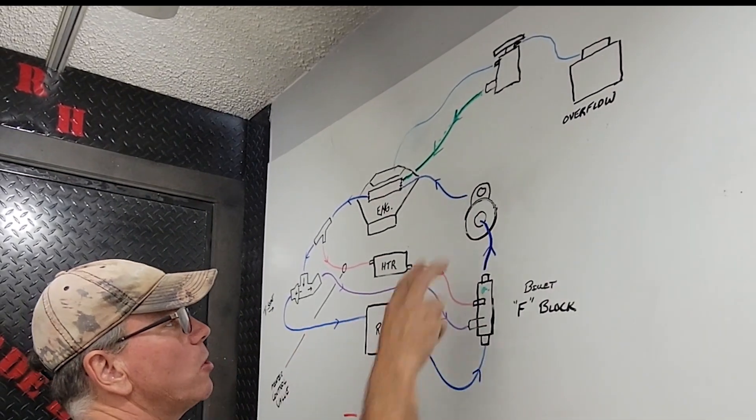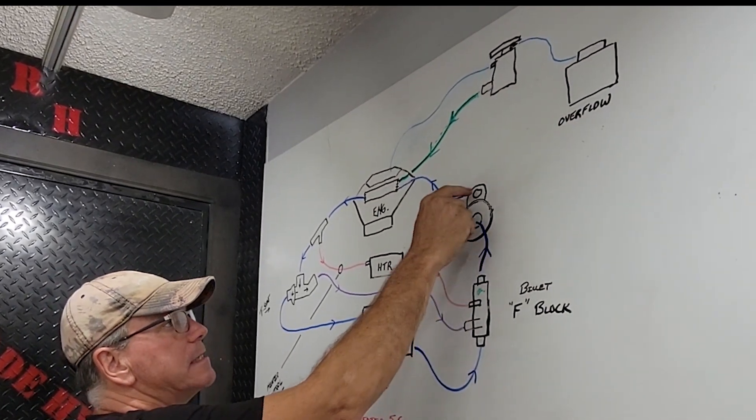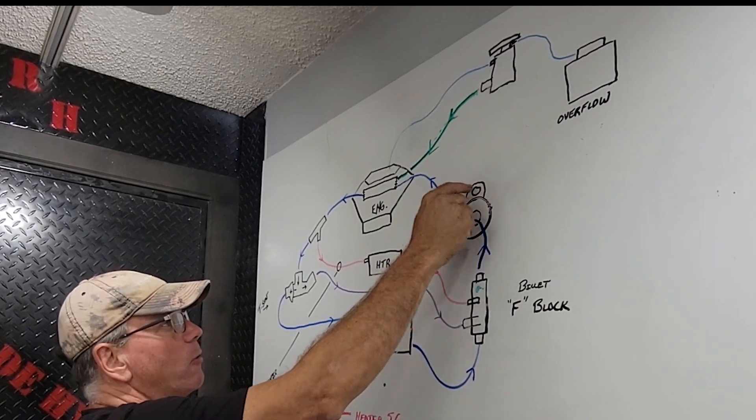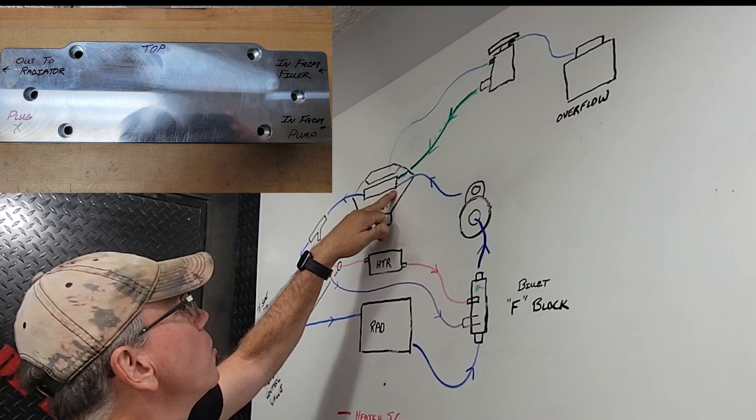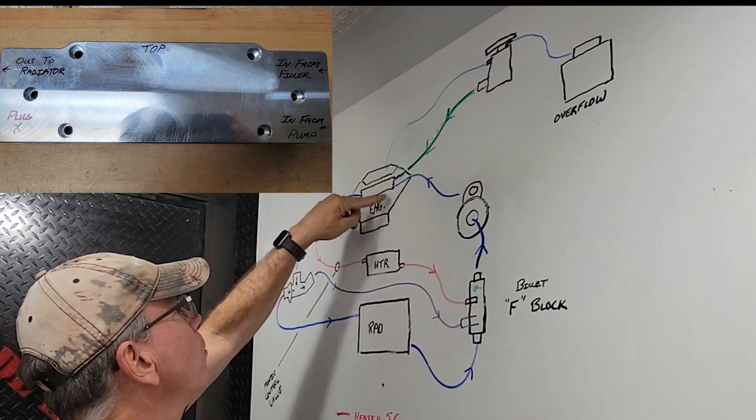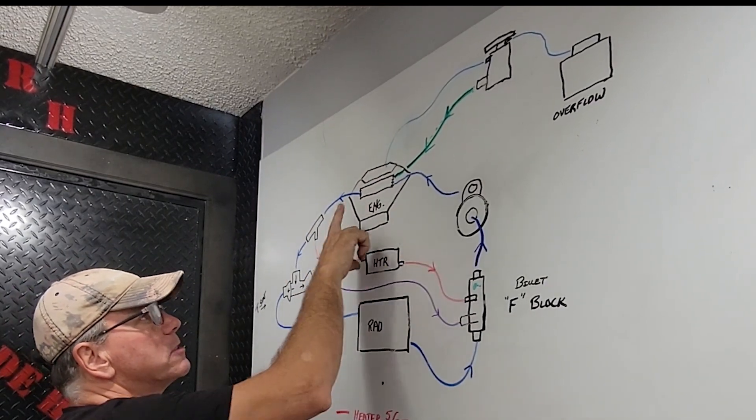The water pump is no longer the two outlet style water pump. We're using the electric water pump that has a single in inch and a quarter, single in or single out inch and a quarter. And that feeds back into the lower out of the two holes right there on the water block, which will then fill the entire engine. And that will be your continuous loop.